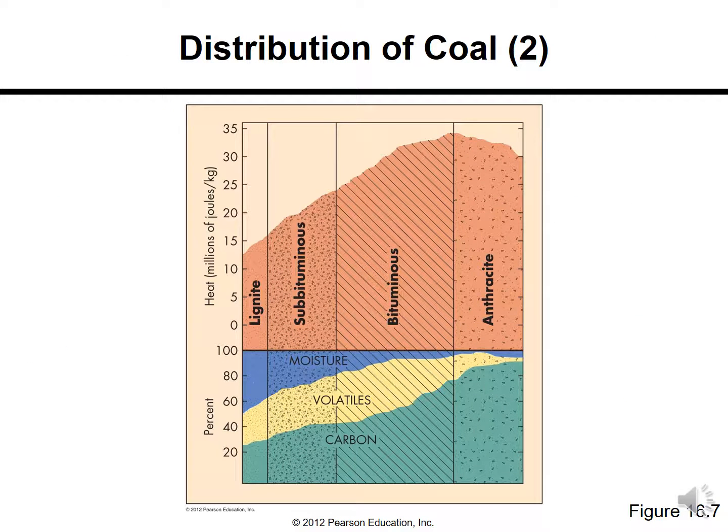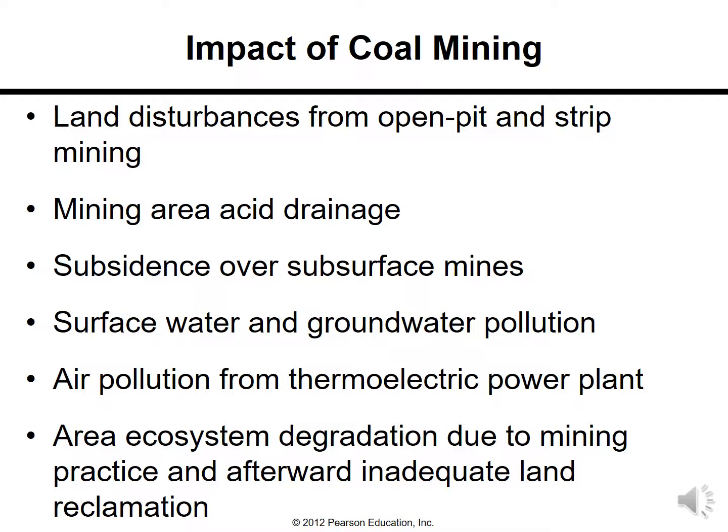This chart shows coal distribution by type: lignite, subbituminous, bituminous, and anthracite, considering heat, carbon content, volatiles, and moisture percentage. The impacts of coal mining include land disturbances from open-pit and strip mining, acid mine drainage — a significant environmental issue — subsurface mine subsidence, surface water and groundwater pollution, air pollution from thermoelectric power plants, and ecosystem degradation due to inadequate land reclamation after mining.